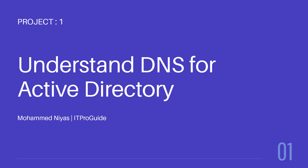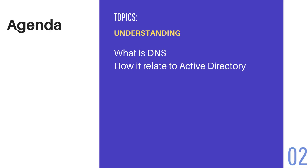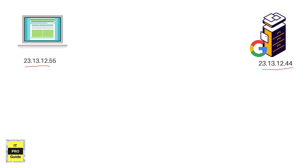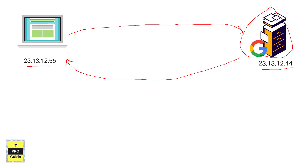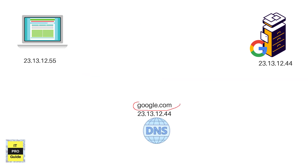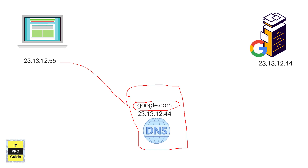In this video we are going to understand about DNS — what is DNS and how DNS works in Active Directory. IP addresses are how computers connect in a network, local or internet. For example, when you type google.com, it actually connects to Google's web server using an IP address. A DNS server holds a list of all domain names and their corresponding IP addresses, so when you type google.com, the DNS server sends back the IP address and your computer connects using it.